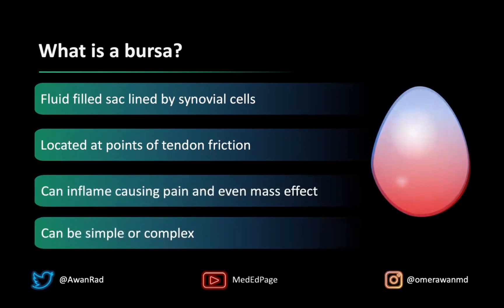The fluid can be simple — on T1 it's dark, on T2 it's bright — or it can be complex, meaning on T1 there can be high signal because of protein or blood. So both simple or complex fluid is possible in a bursa.